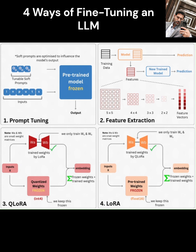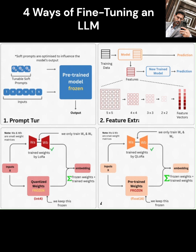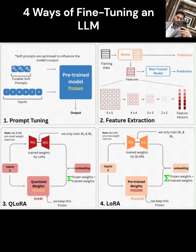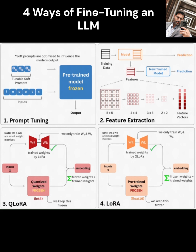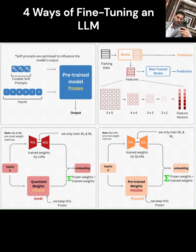Now let's talk about LoRA, which stands for Low-Rank Adapters. This is one of the most popular methods right now. LoRA takes a different approach — it doesn't touch the main, frozen weights of the big model either. Instead, it inserts tiny pairs of matrices called adapters into each block of the model's internal structure, specifically the transformer blocks. When you fine-tune, you only train the weights within these tiny adapter matrices. The main model's large weights — which are often stored in a memory-hungry format like Float16 — stay completely frozen. This keeps memory usage and computation much lower compared to trying to train the whole model.